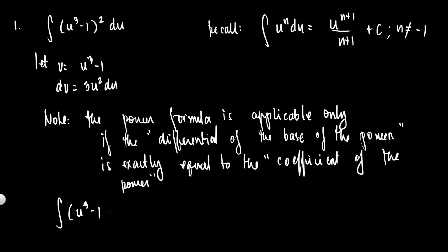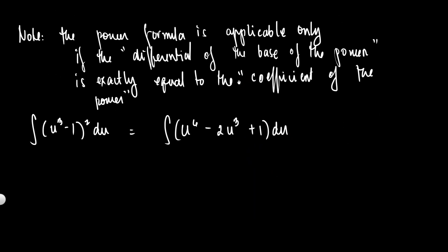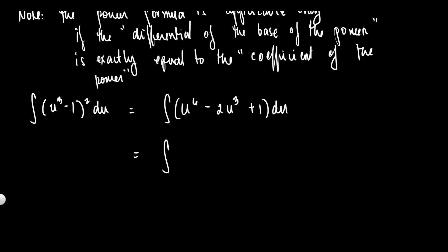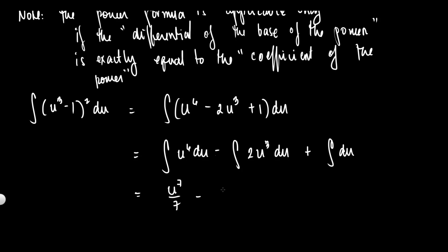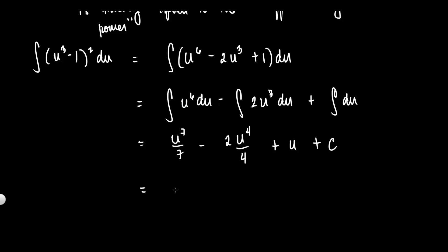What we're going to do is expand this integral. We square (u³ - 1), giving us u⁶ - 2u³ + 1, du. Distributing the integral sign: the integral of u⁶ du minus the integral of 2u³ du plus the integral of du. Applying the power formula: u⁷/7 - 2u⁴/4 + u + C. Simplified, this is (1/7)u⁷ - (1/2)u⁴ + u + C. That's your final answer.